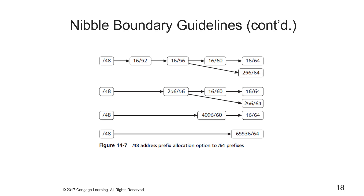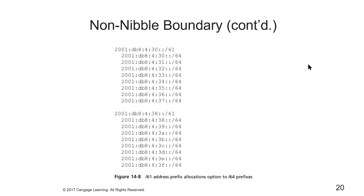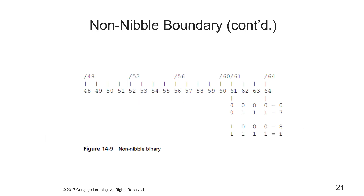Here's an example of the /48 address prefix allocation down to /64 prefixes. You can use non-nibble boundaries to break down an IPv6 address allocation to smaller network subnets — for instance down to /64. Here's an example of taking a /61 prefix allocation down to /64 prefixes, and here is how you would walk through that exercise for a non-nibble boundary.